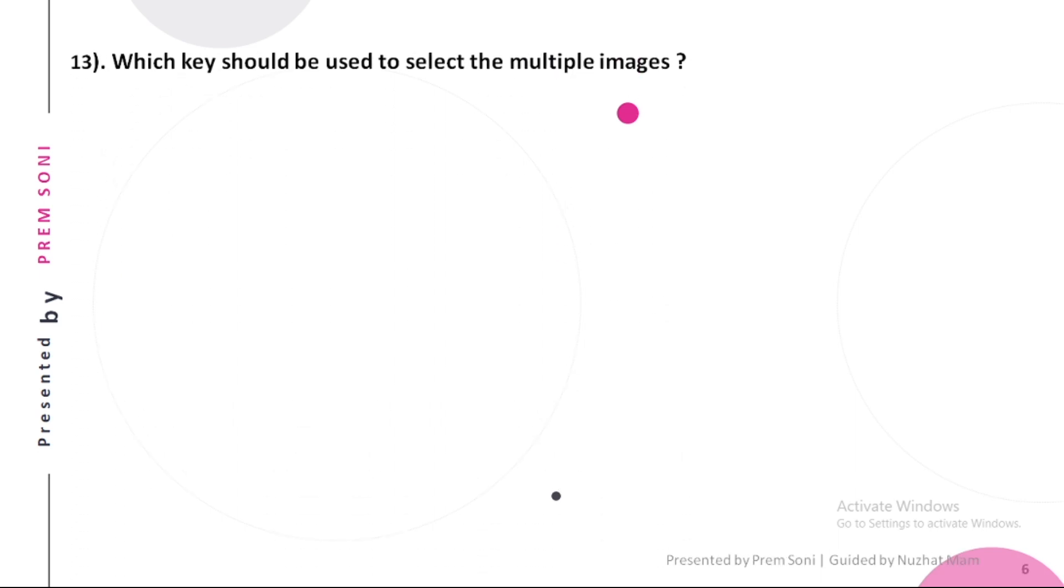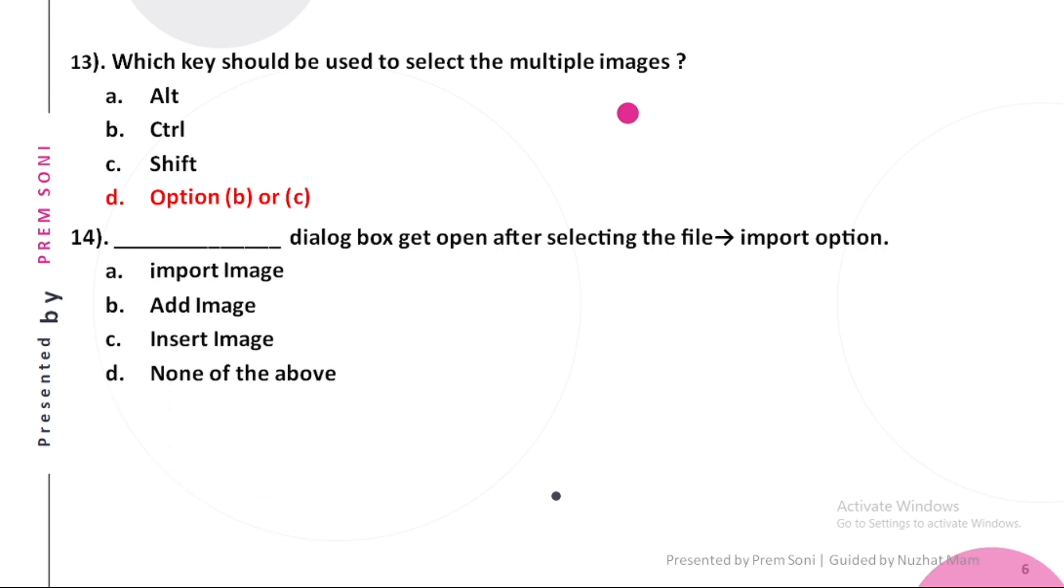Thirteenth, which key should be used to select multiple images? Options are: a. Alter, b. Ctrl, c. Shift, d. Option b or c. The answer is Option b or c. Fourteenth, dash dialog box gets opened after selecting the file import option. Options are: a. Import image, b. Add image, c. Insert image, d. None of the above. The answer is Import image.